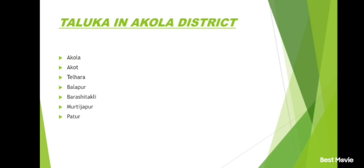Ahmadnagar district and its talukas: Akola, Jamkhed, Karjat, Kopargaon, Nagar, Nevasa, Parner, Pathardi, Rahata, Rahuri, Sangamner, Shrigonda, Shrirampur.